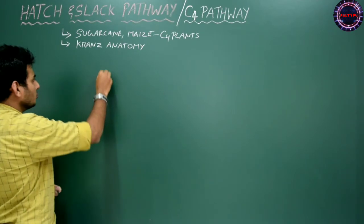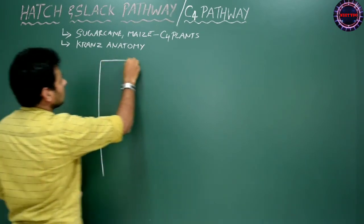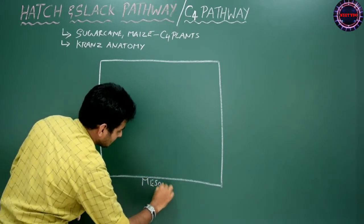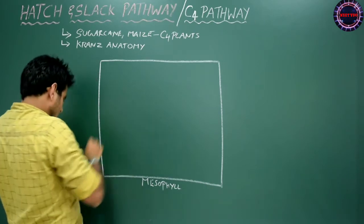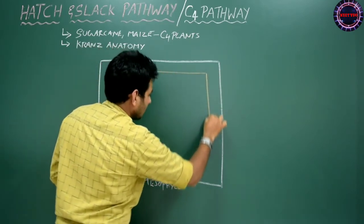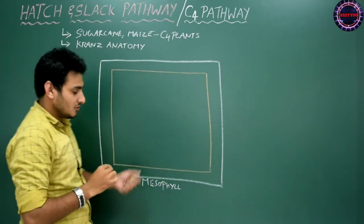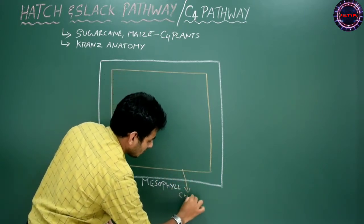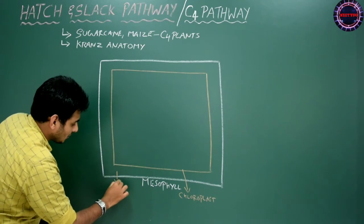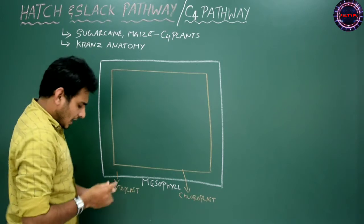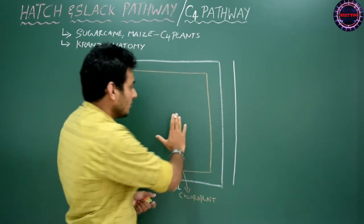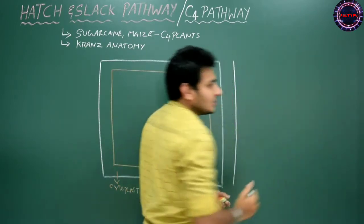To understand the C4 pathway, we draw a box representing the mesophyll cell. Within this mesophyll cell, I draw one more box representing the chloroplast. The portion outside the chloroplast but inside the mesophyll cell is the cytoplasm. I then draw one more box representing the bundle sheath cell, with another box inside it for the chloroplast of the bundle sheath cell. Next to the bundle sheath cell is the vascular bundle.